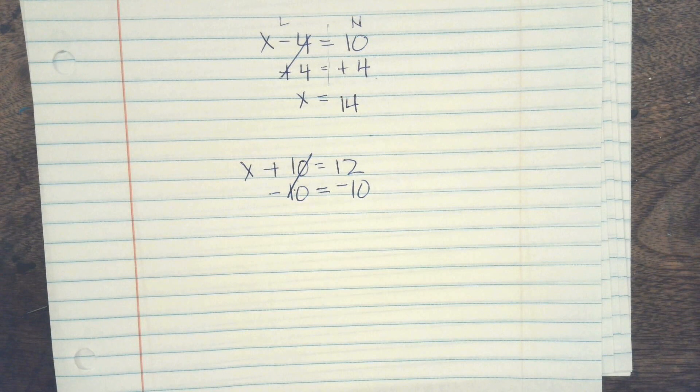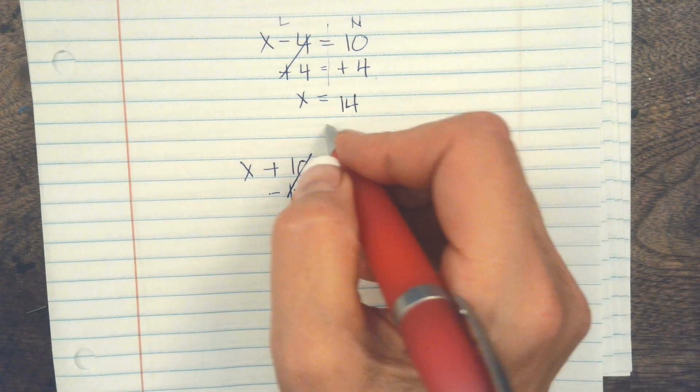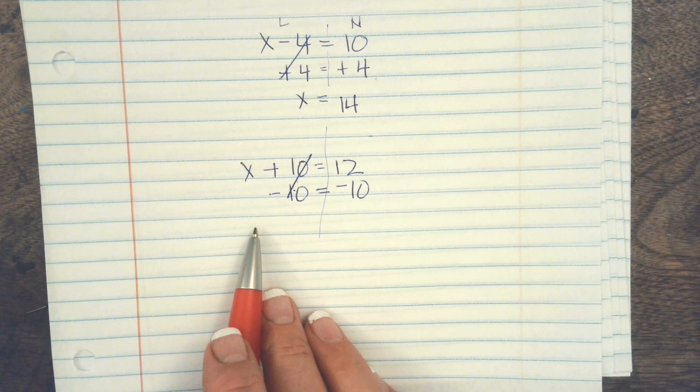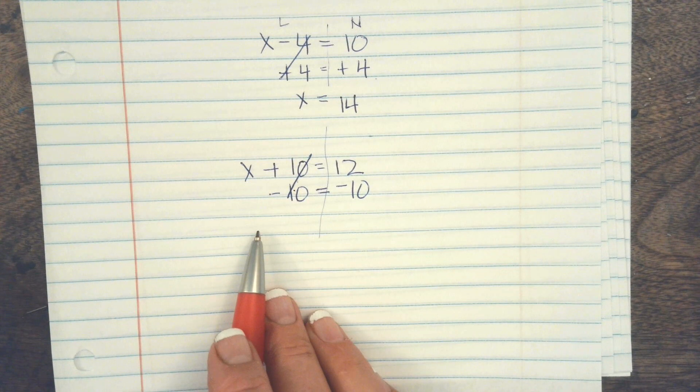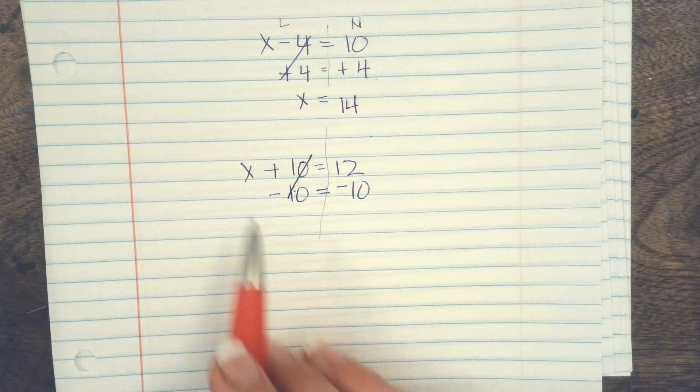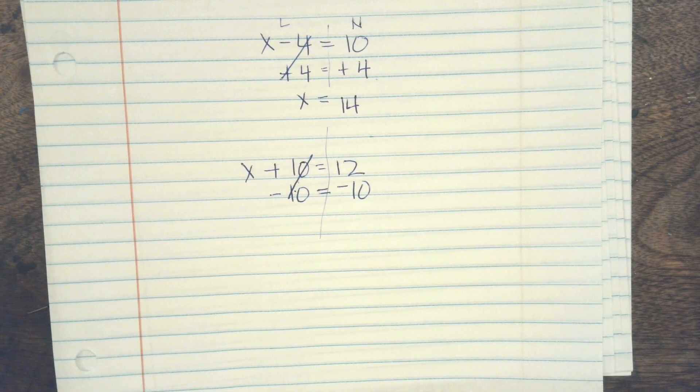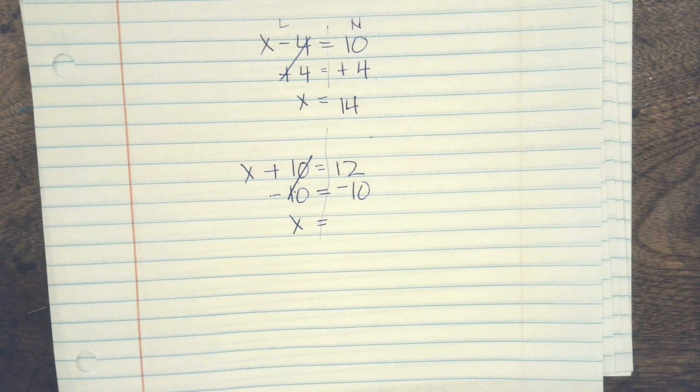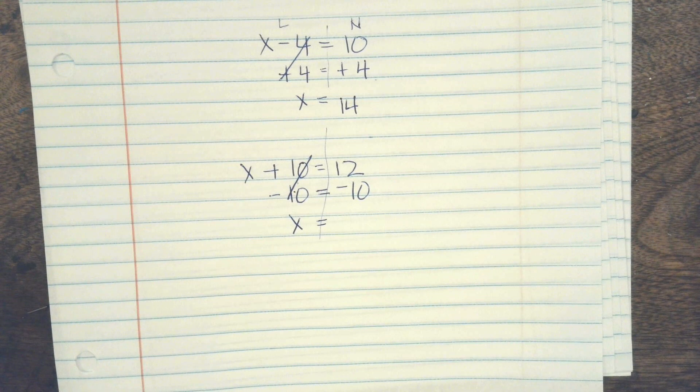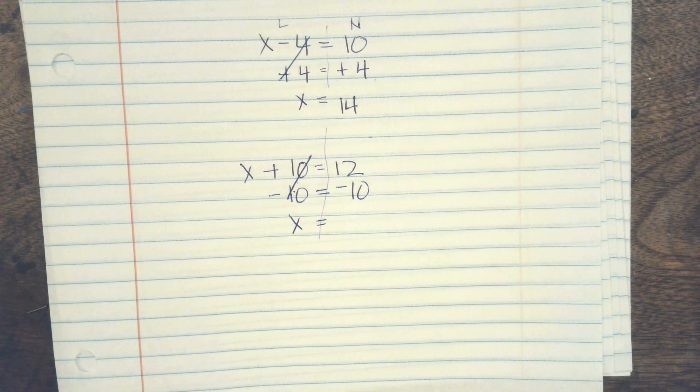And now what do I do? What's left on this side? The x. So I write my x and then I can solve my problem. It's 2. Yep.